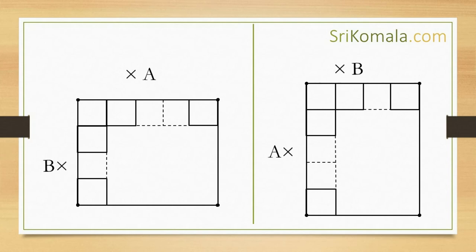Therefore, as can be understood from the two diagrams, the results of both A times B and B times A are the same.